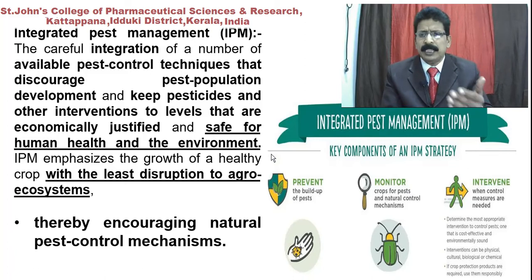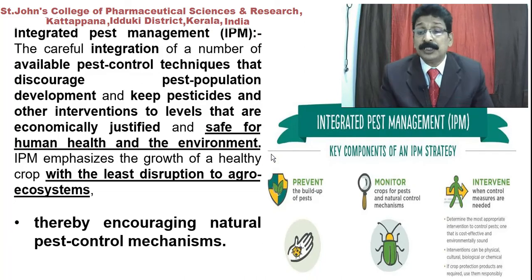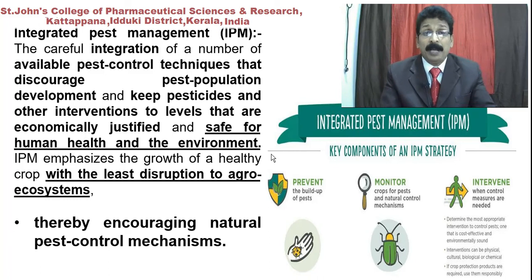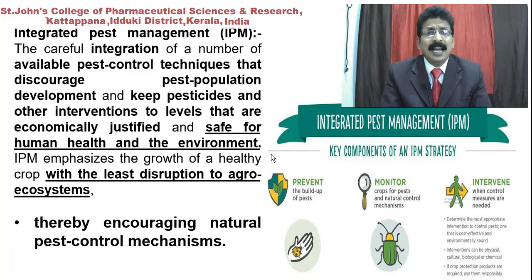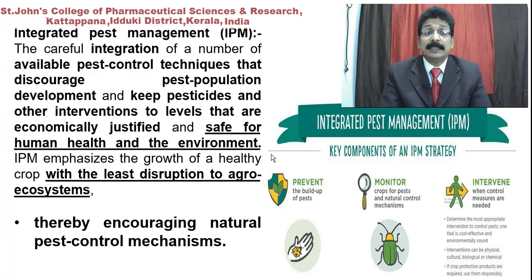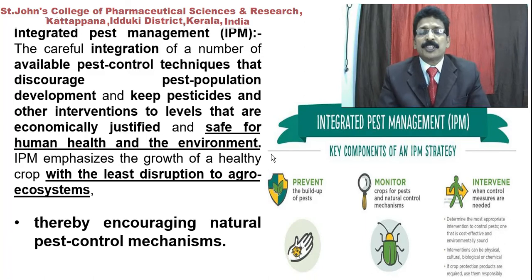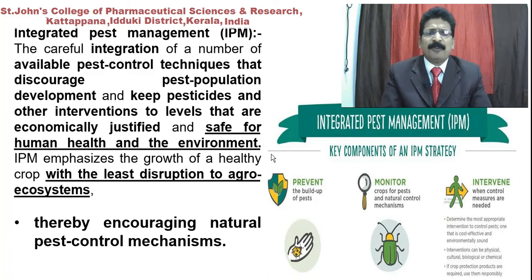Integrated Pest Management, or IPM, is very important for any type of cultivation of medicinal plants and even agricultural cultivation under WHO good manufacturing practice guidelines. IPM is the careful integration of a number of valuable pest control techniques that discourage pest population development and keep pesticide interventions to levels that are economically justified and safe for human health and the environment.